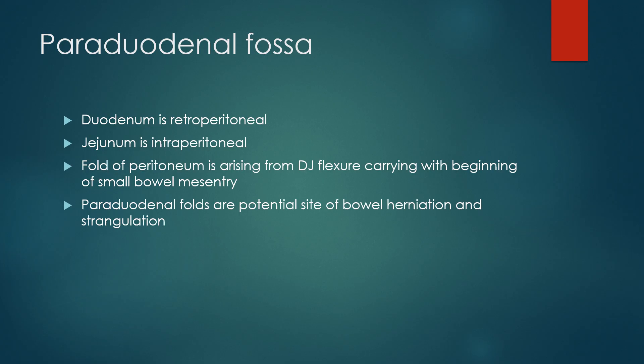To understand paraduodenal fossa, you need to understand the arrangement at the duodenojejunal junction. The duodenum is retroperitoneal — behind the peritoneum. The jejunum is intraperitoneal because the jejunum carries with it a mesentery. The fold of peritoneum arises from the duodenojejunal flexure, carrying with it the beginning of the small bowel mesentery.